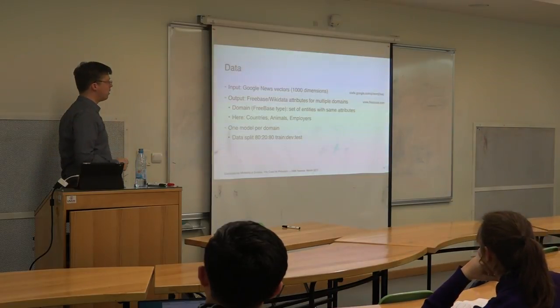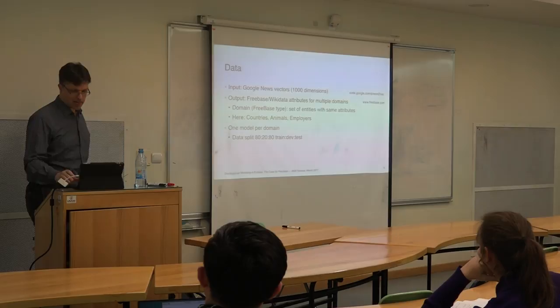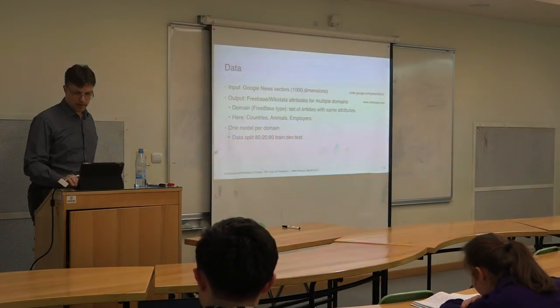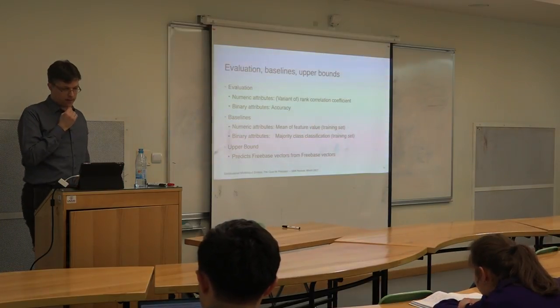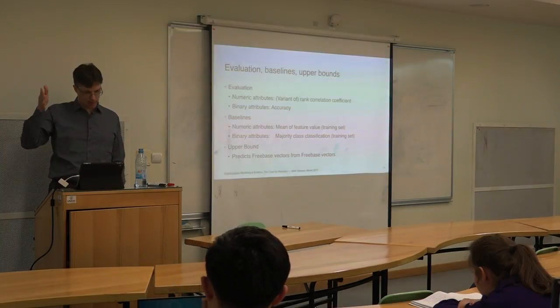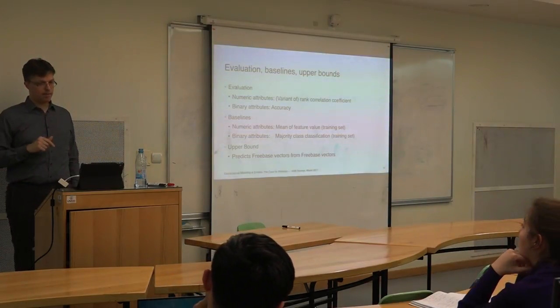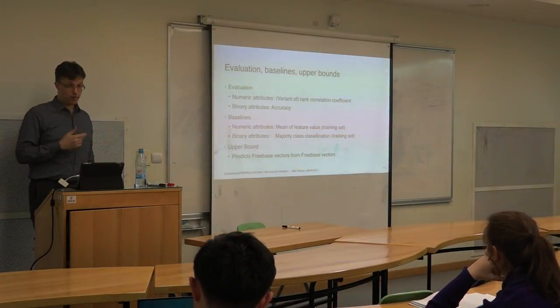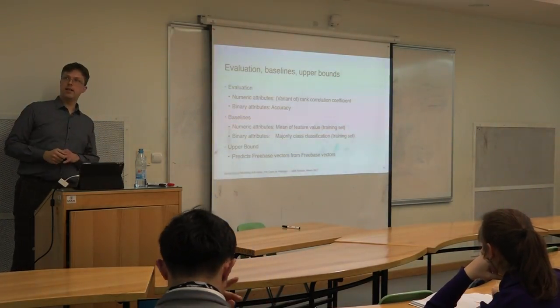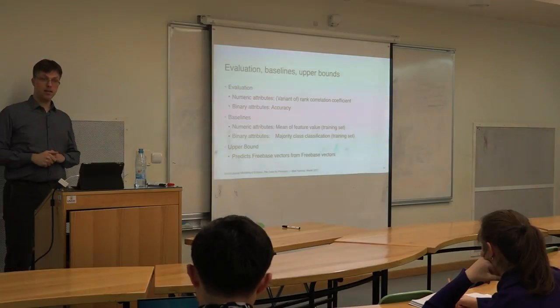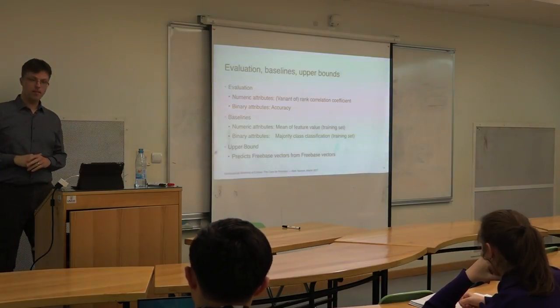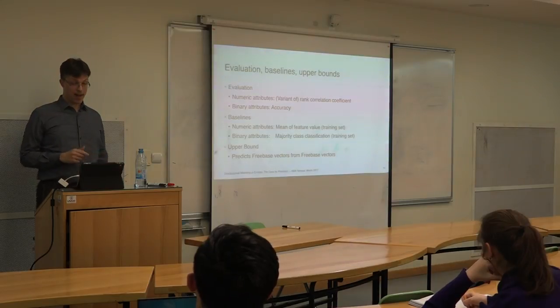So we looked at a couple of domains, and I'm going to concentrate on a couple of those here: countries, animals, and employers. In the evaluation we have to distinguish between the numeric attributes and the binary attributes. For numeric attributes, as I said before, we use a rank correlation coefficient, so we are asking: is the ranking induced on the entities by the attribute correctly predicted by the model?